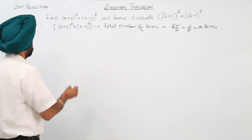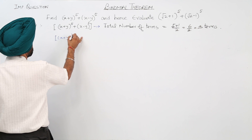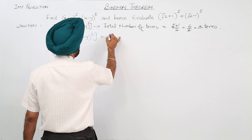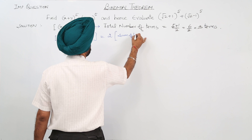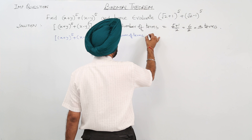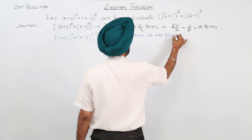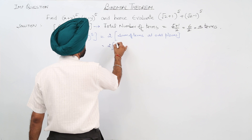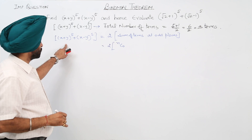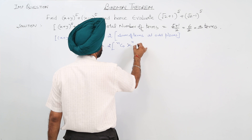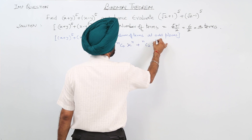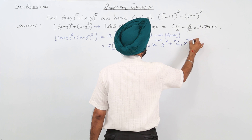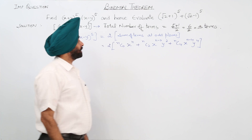Now, (x + y)⁵ + (x - y)⁵ equals twice the sum of terms at odd places. The three terms will be: ⁵C₀ · xⁿ, plus ⁵C₂ · xⁿ⁻² · y², plus ⁵C₄ · xⁿ⁻⁴ · y⁴. Only these three terms — first, second, and third.